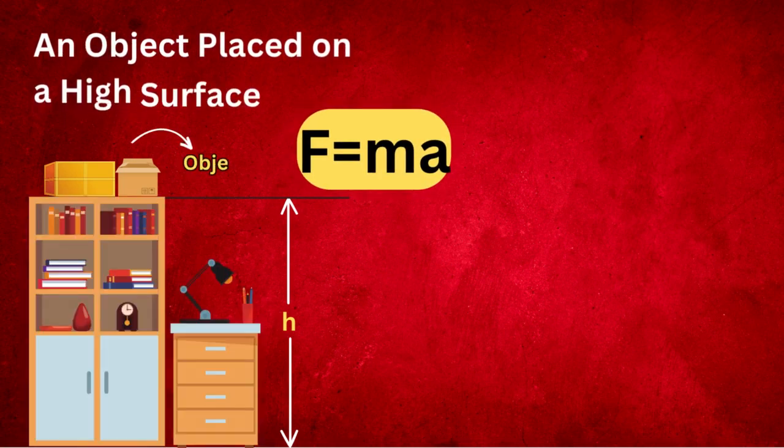Followed by an object placed on a high surface. It possesses a significant amount of potential energy. The state of the body does not change, and the state of equilibrium is maintained.